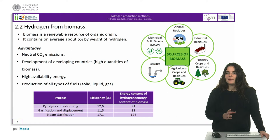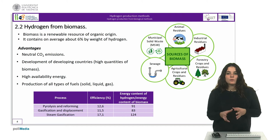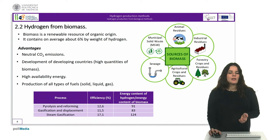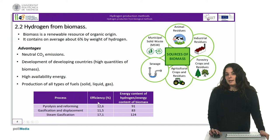Obtaining hydrogen from biomass is a thermochemical process and we can differentiate mainly two methods: pyrolysis and gasification. Both processes, with the subsequent reforming of the liquid products obtained, are identical to those applied to fossil fuels. The main differences are due to the fact that the chemical composition of biomass is highly variable and that its CO2 emissions are not accounted for due to its short absorption cycle.